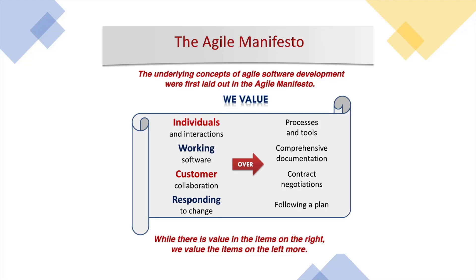The first is 'Individuals and interactions over processes and tools.' The left-hand side is prioritized over the right-hand side. People and communication are more important than processes and tools. Both matter, but the left has higher value. The second is 'Working software over comprehensive documentation.' Even if you have 100 pages of documentation, if your software is not working, it doesn't serve any value. Documentation is important, but before documentation, your software has to work.